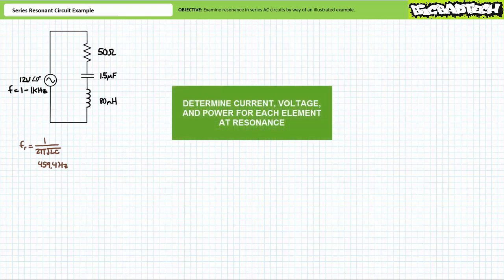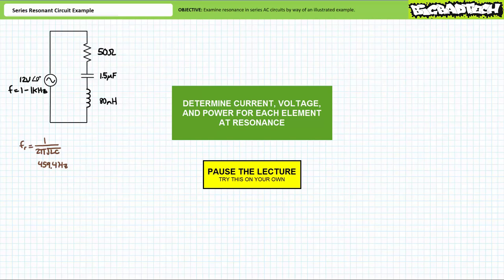Let's now determine the electrical properties of this circuit at conditions of resonance. See if you can determine the source current, the voltage across each element, and the apparent real and reactive power experienced by each element at the resonant frequency of 459.4 hertz. By all means pause the lecture and try this on your own. If you're tracking, you should have obtained the following results.